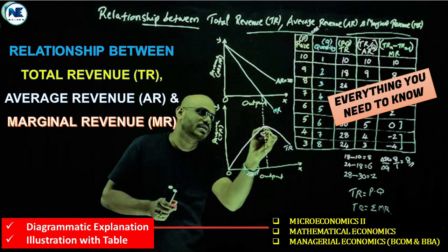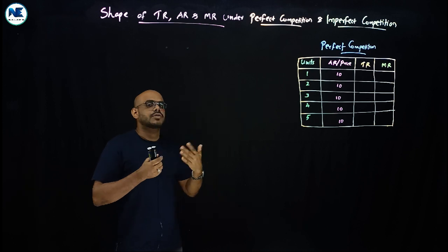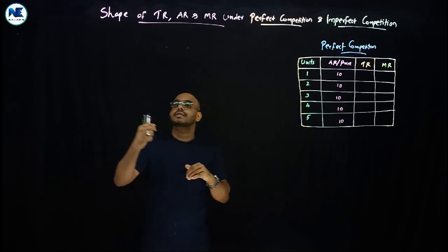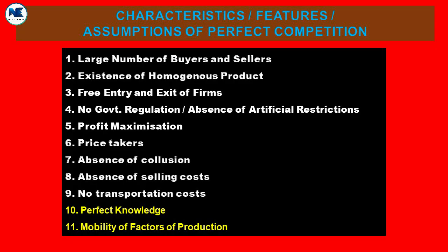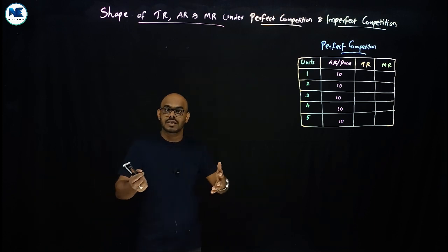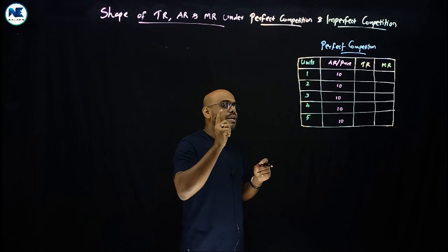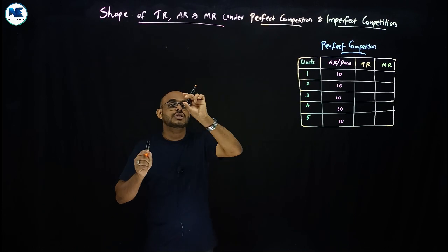Under perfect competition, there are a large number of buyers and sellers, homogeneous products, uniform price, free entry and exit of firms, no transportation cost, no selling cost, perfect knowledge, perfect mobility of factors of production, and identical or homogeneous products. That is why AR and MR coincide.